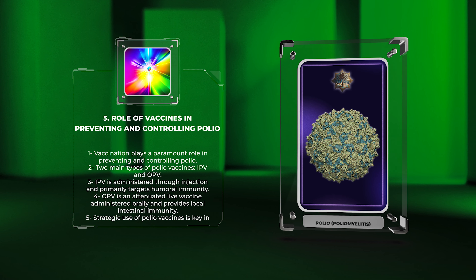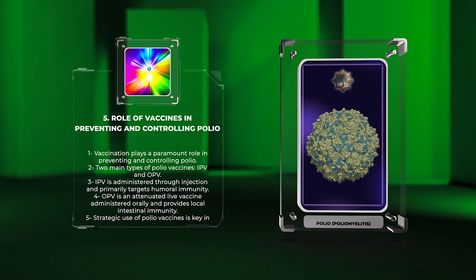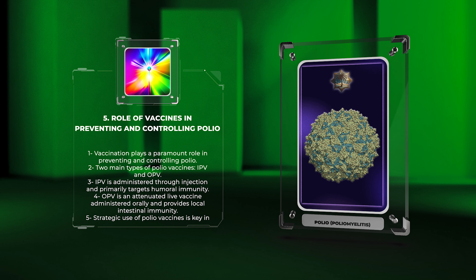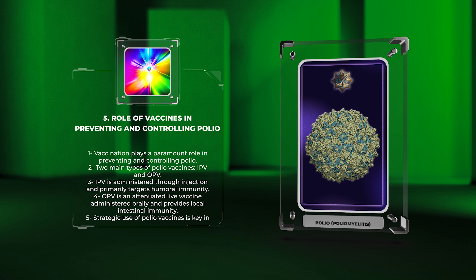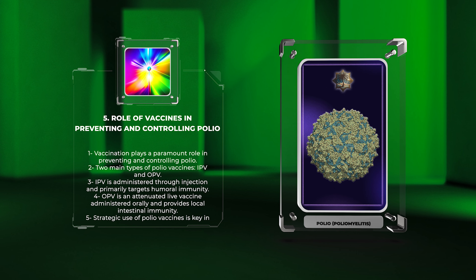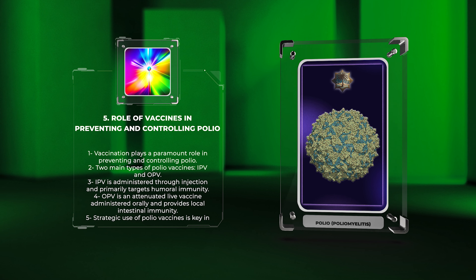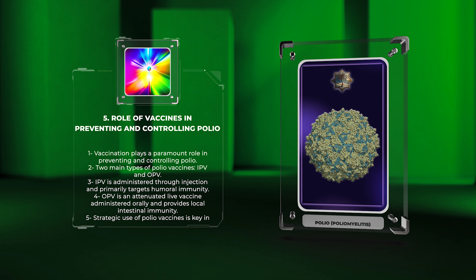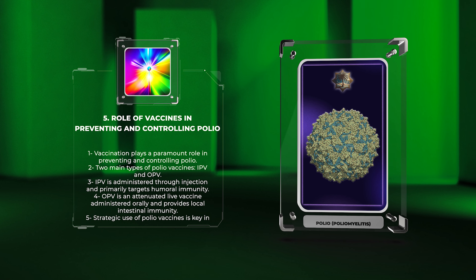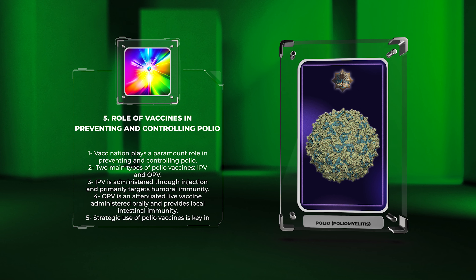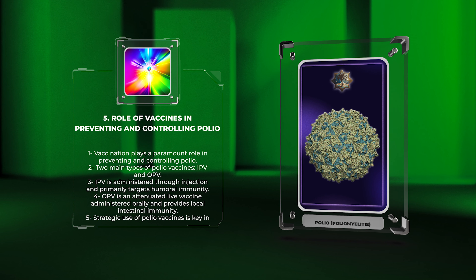OPV, on the other hand, is an attenuated live vaccine administered orally. It stimulates both humoral and cellular immune responses, providing local intestinal immunity in addition to systemic protection. OPV is advantageous in areas where poliovirus transmission is still ongoing due to its ability to induce virus-specific mucosal immunity. The strategic use of polio vaccines, tailored to individual epidemiological contexts, is key in achieving and maintaining polio eradication. Vaccination campaigns and routine immunization have significantly reduced the global burden of poliovirus infections.